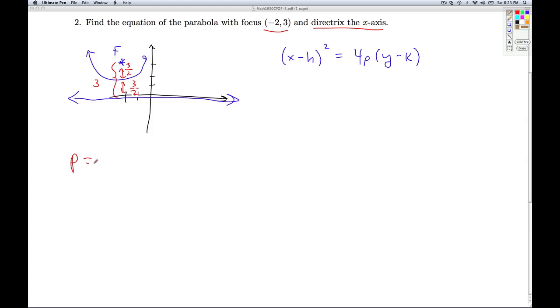All right, so that tells us that p is 3 halves. I know that p is positive because the parabola is opening upward. Okay, so that's what the p is going to be. Now we just need to find the vertex. Well, the vertex is midway between the focus and the directrix. So the focus is up here at -2, 3. If I go down 3 halves units, I'm at 3 halves. So the vertex is at -2, 3 halves. All right, so this is my hk.